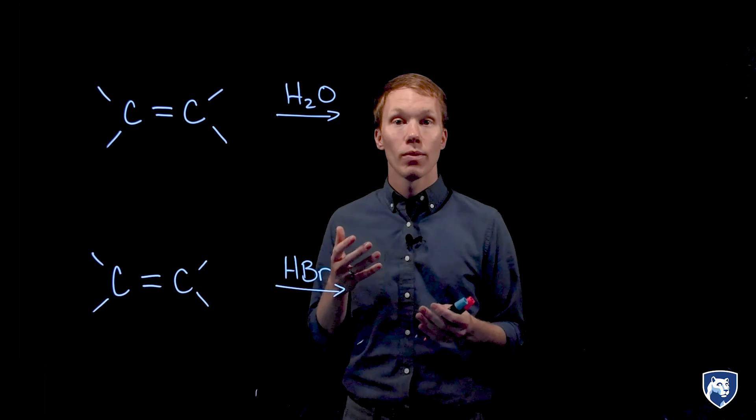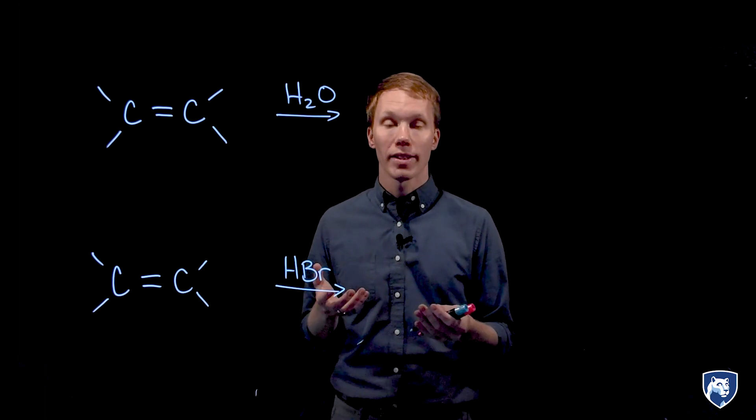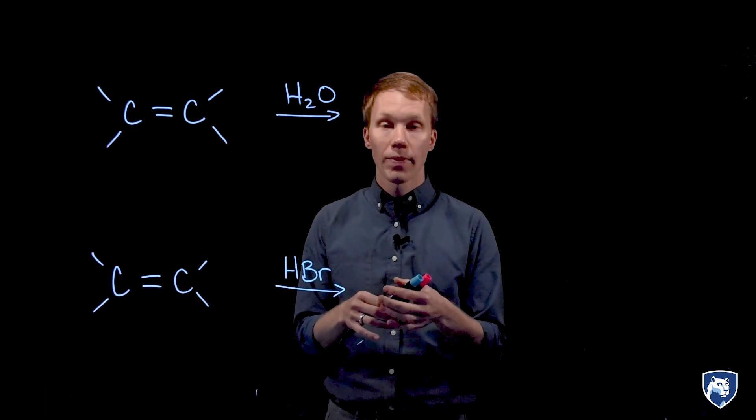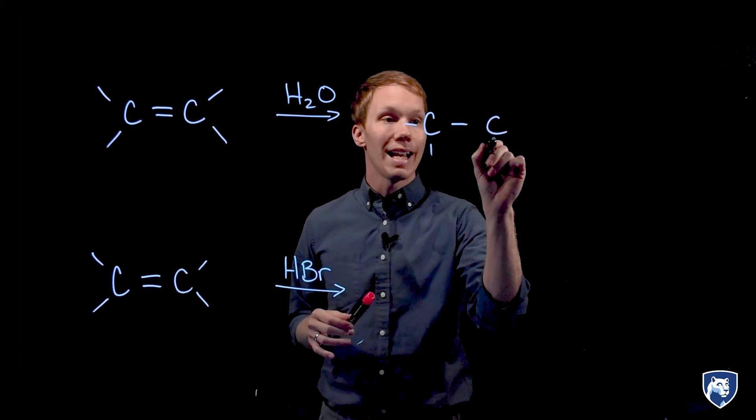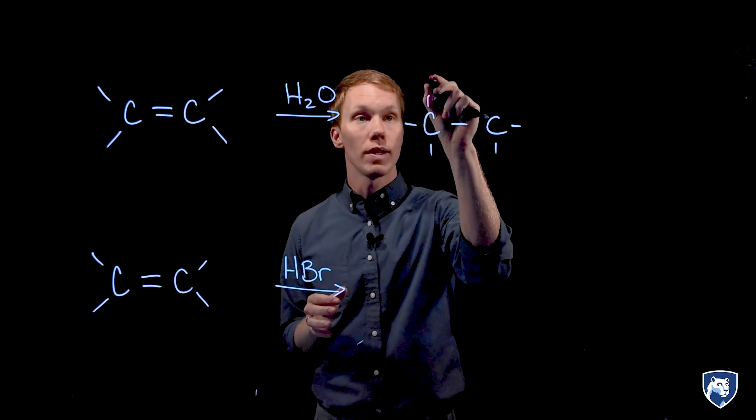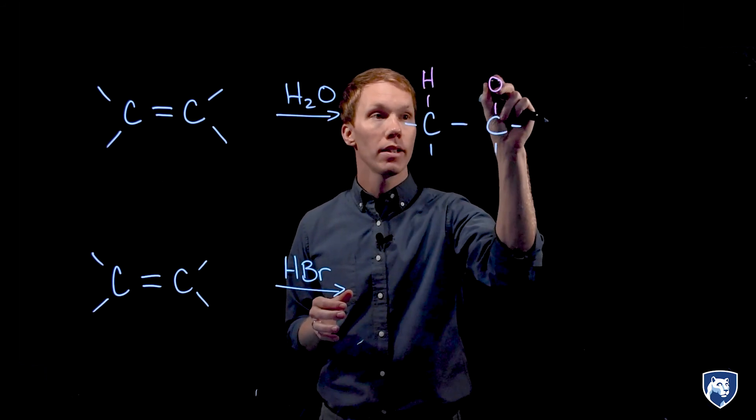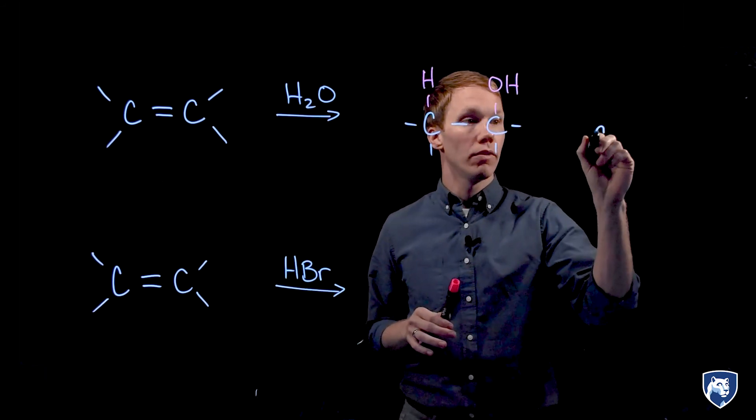As the name implies, we will be reacting something with water, and this reaction involves an alkene with water and produces an alcohol. We add an H and an OH to each carbon of the double bond to produce that alcohol functionality.